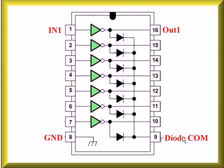Pin 8 is your ground, and pin 9 is your diode common. These diodes in here are parasitic suppression diodes for use with relays, contactors, servo motors, etc.